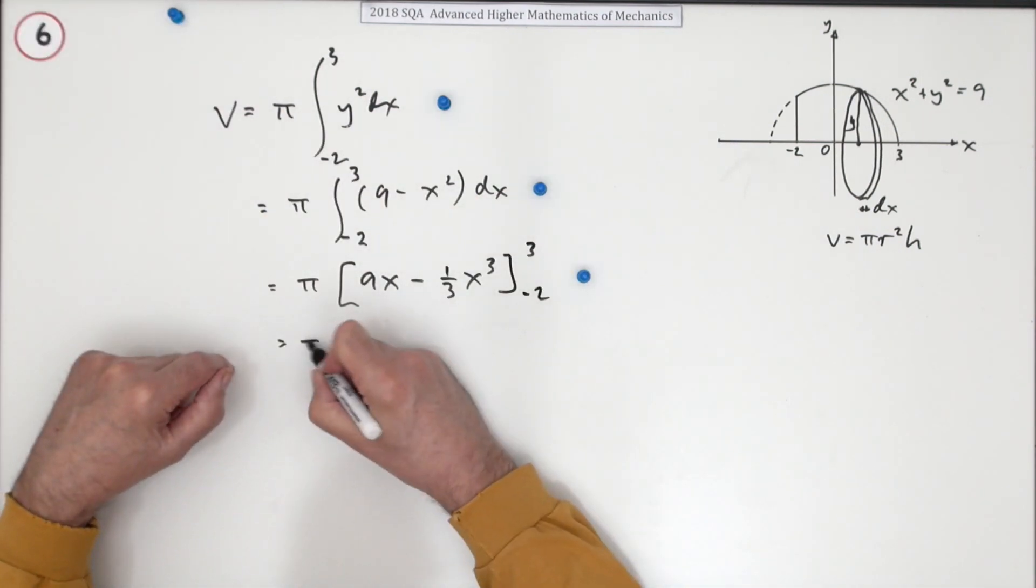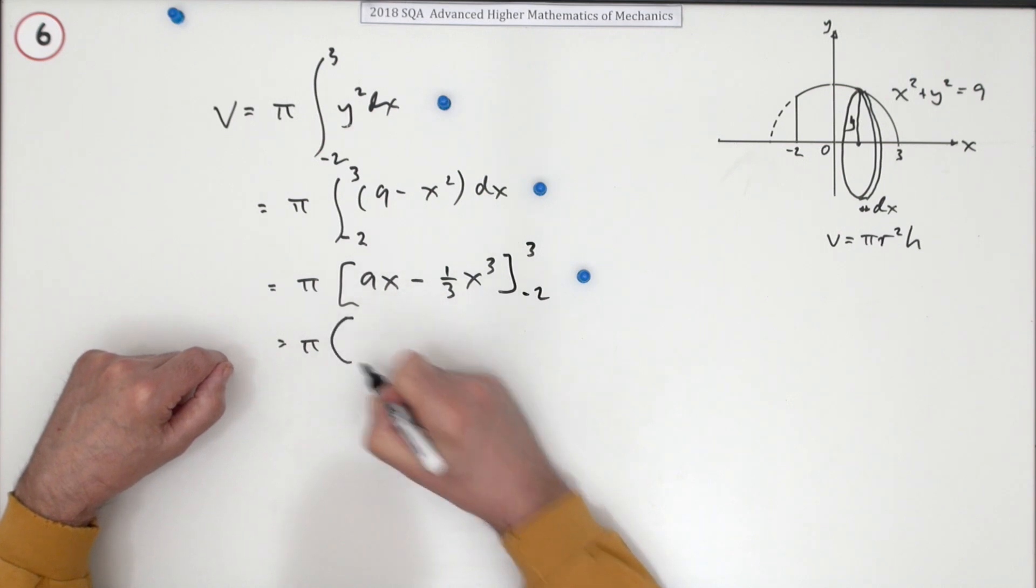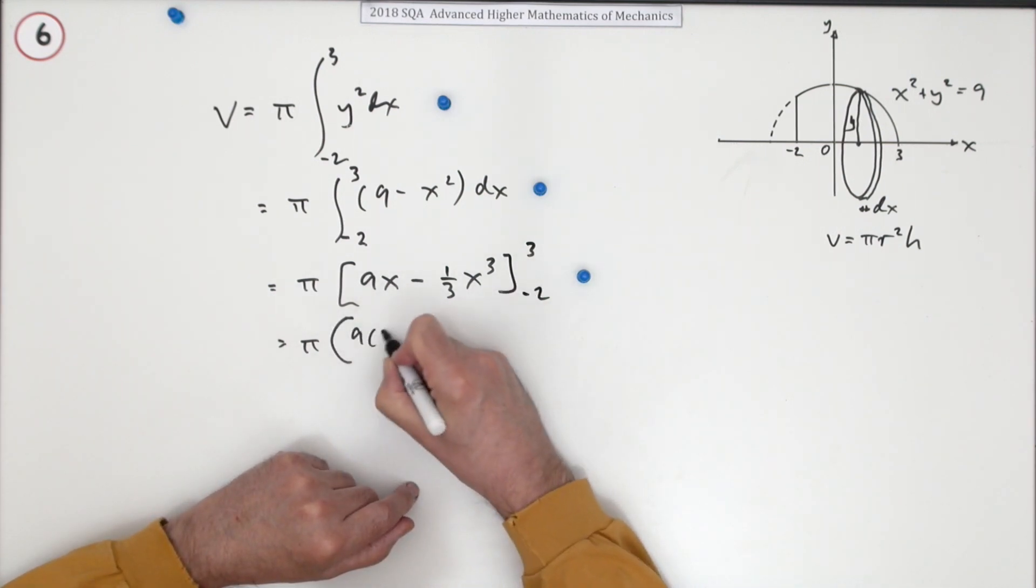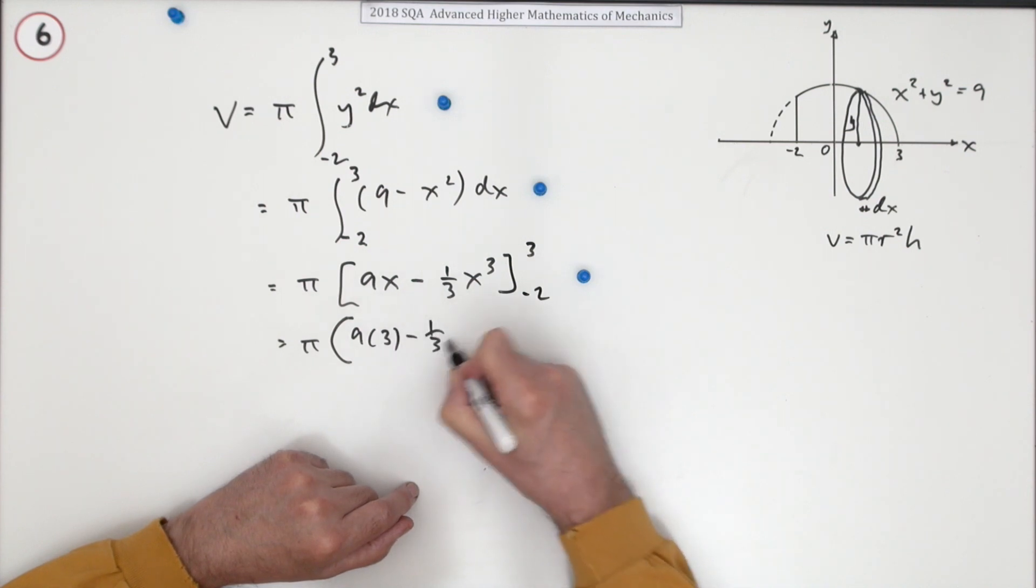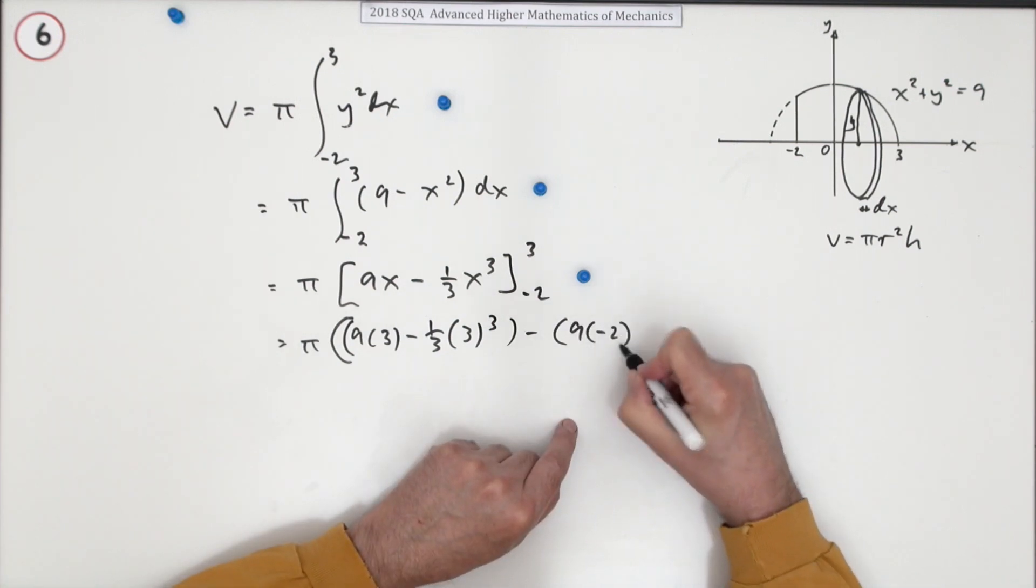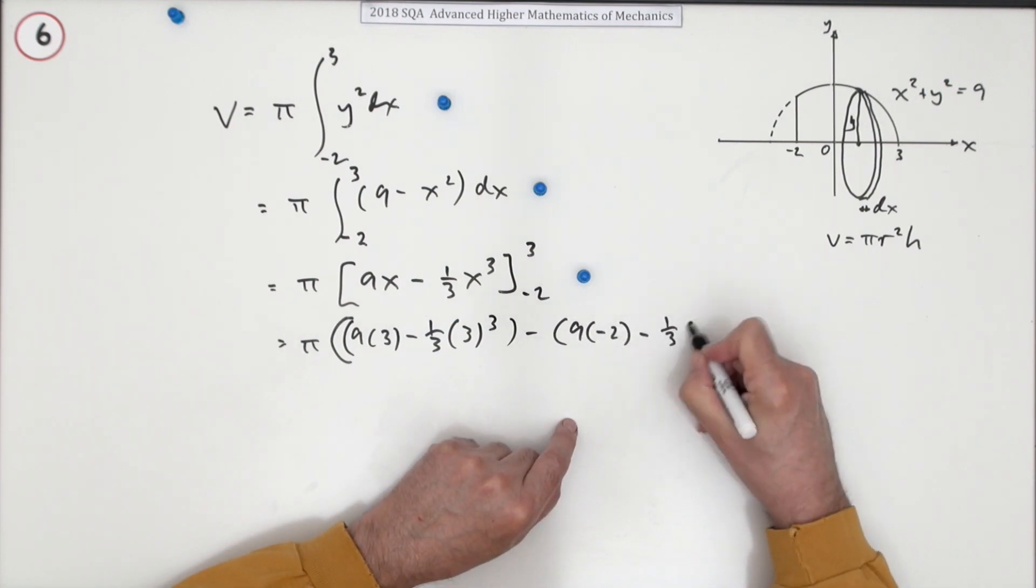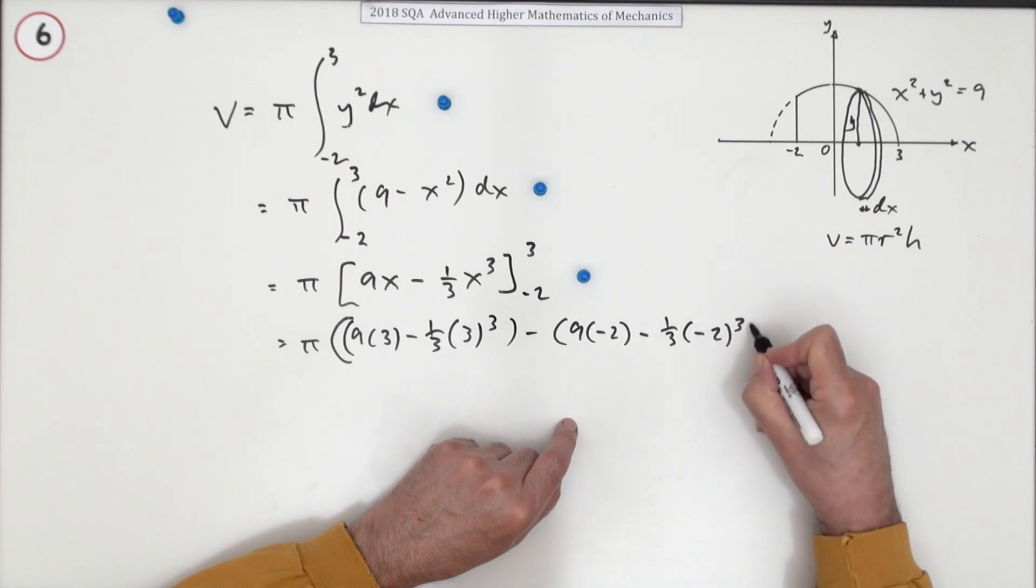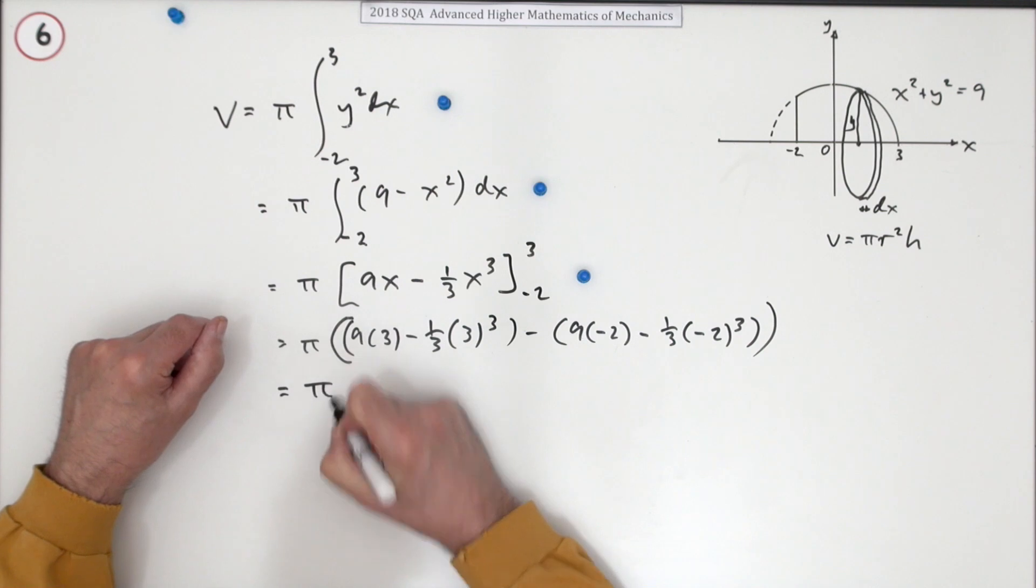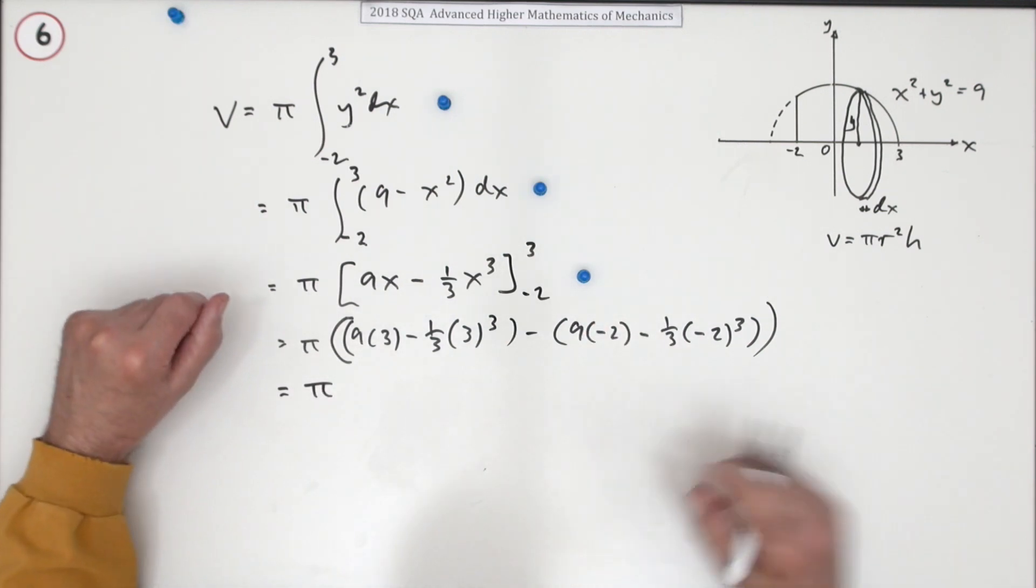The final mark's just for putting it all together. So what have we got? It's going to be 9 times 3 minus 1 third of 3 cubed, minus 9 times negative 2 minus 1 third of negative 2 cubed. There's only one mark for all this calculation. But then you could just put that all into your calculator.